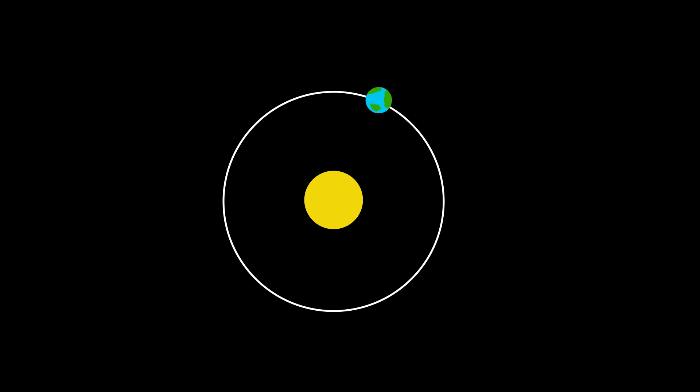Okay, well, ignoring all the other objects in the solar system, which, surprisingly, is an okay thing to do, the only external force acting on the Earth is its gravitational attraction to the Sun.